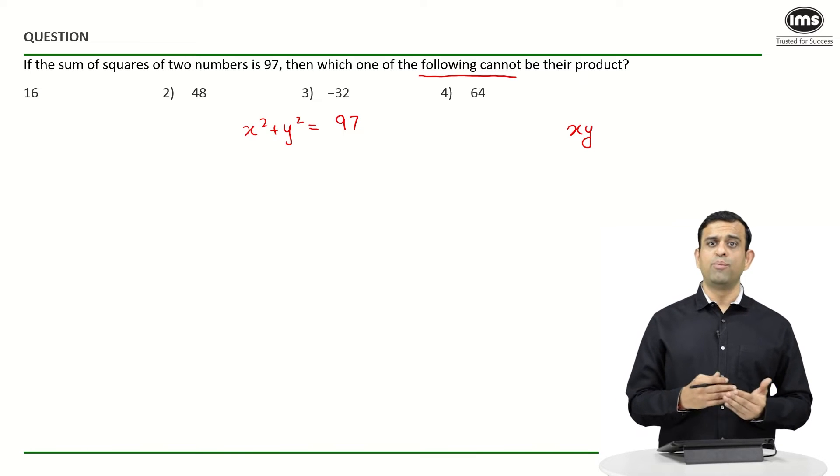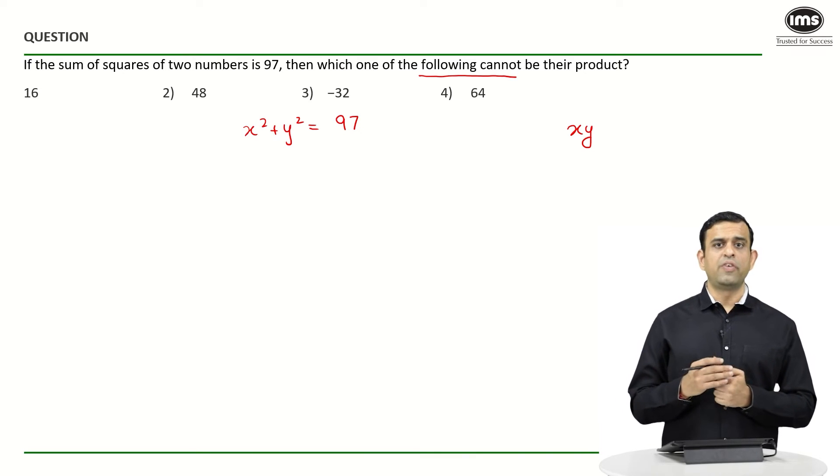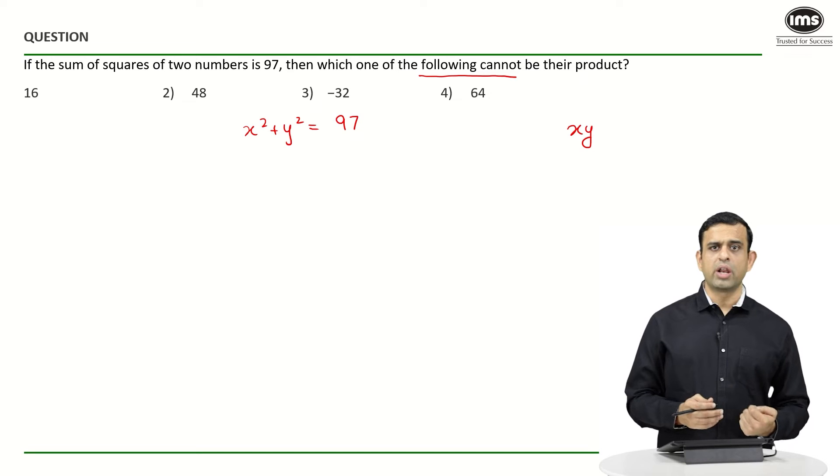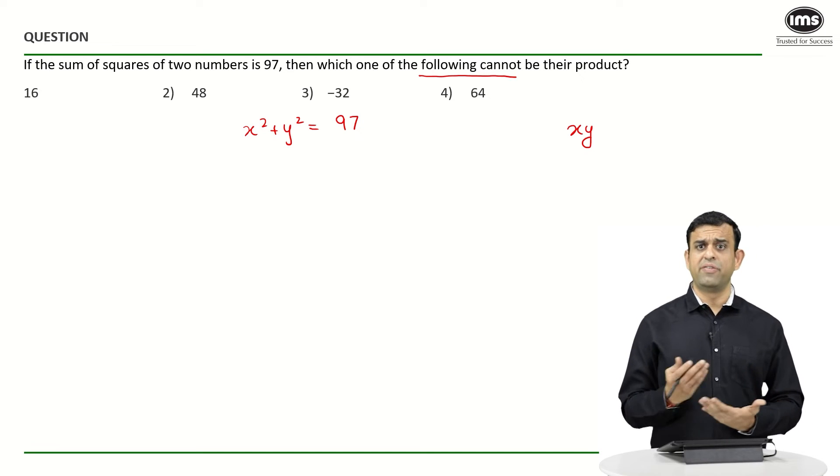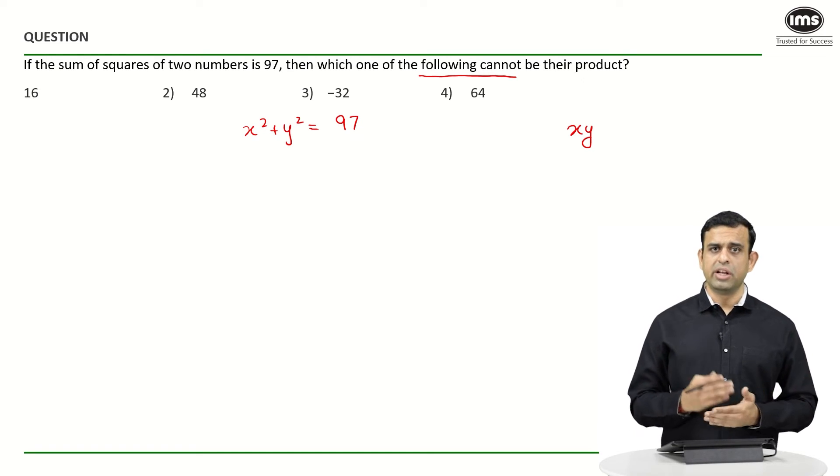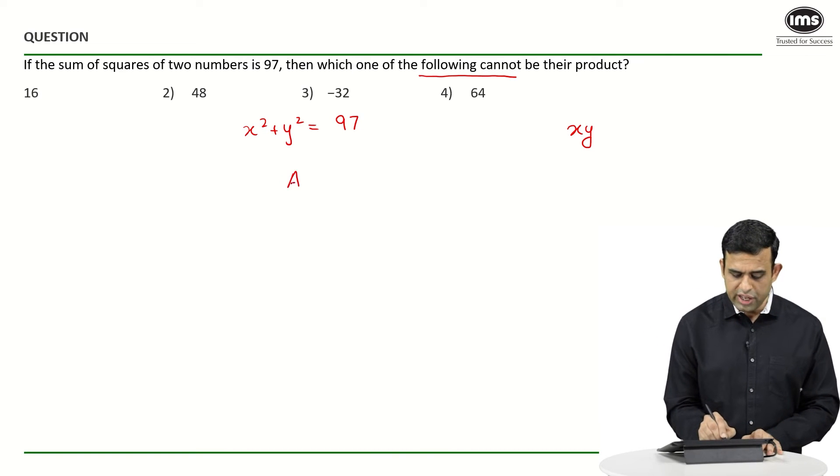So if I assume my variables to be x² and y², both of which are going to be definitely a positive quantity since square of something is going to become a positive quantity, one can say if I use AM ≥ GM.